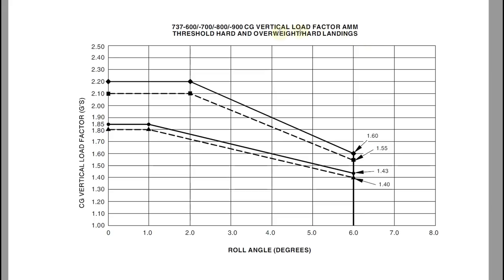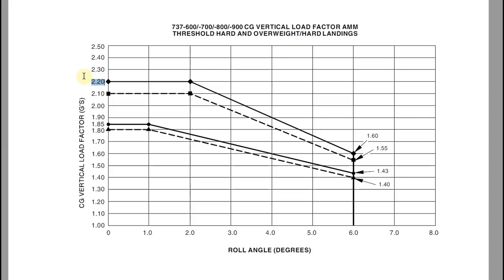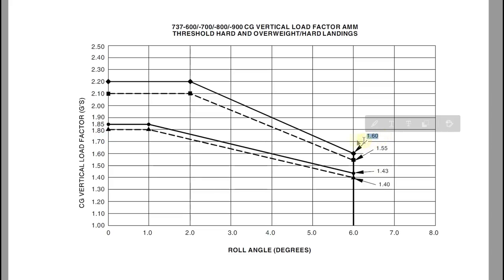From the AMM, the maximum load for the Boeing 737 for the highest inspection level is 2.2g. At the bottom of the table we also have the roll angle in degrees — for example, landing with a bank of six degrees at 1.6g is equivalent to 2.2g with wings level, so an inspection would still be required due to the asymmetric stress on one landing gear.